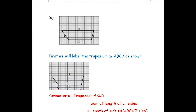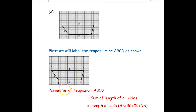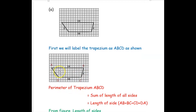We will take the first trapezium. We name its vertices as A, B, C, D. Then we are going to find the perimeter of this trapezium. The perimeter of a trapezium is the sum of the lengths of all its sides: AB plus BC plus CD plus DA.